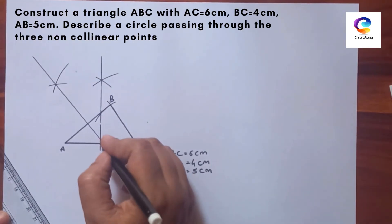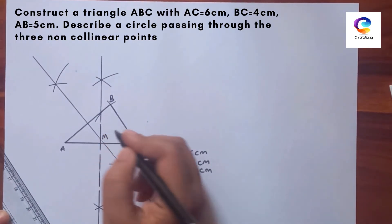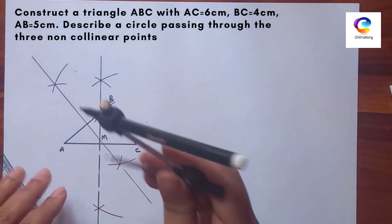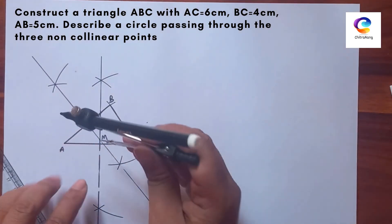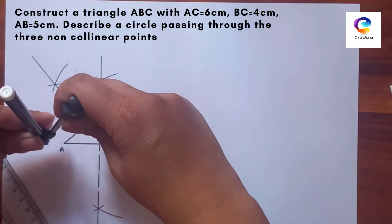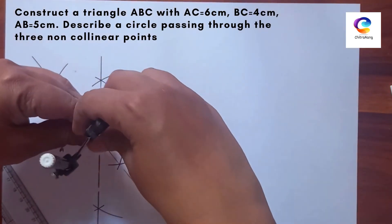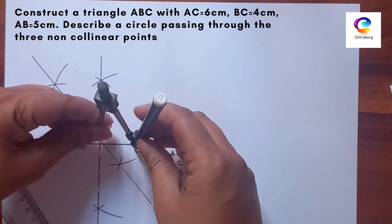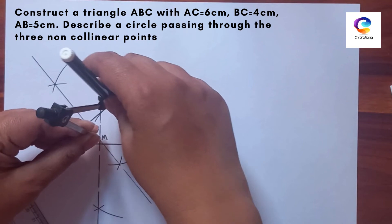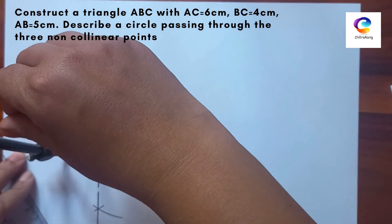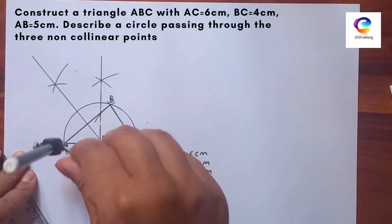In this way, we got this point M. Now take the distance in the compass MA and draw a circle.